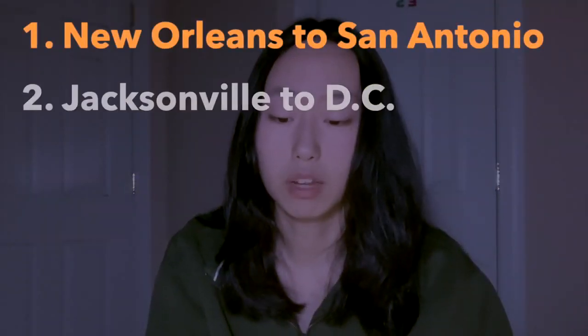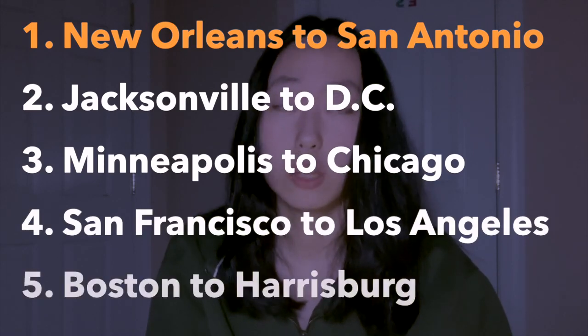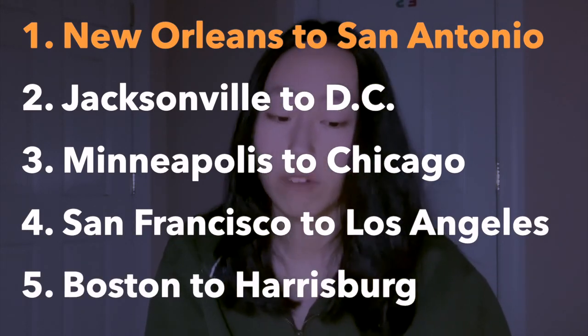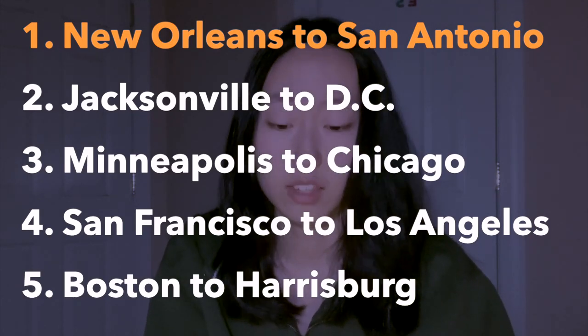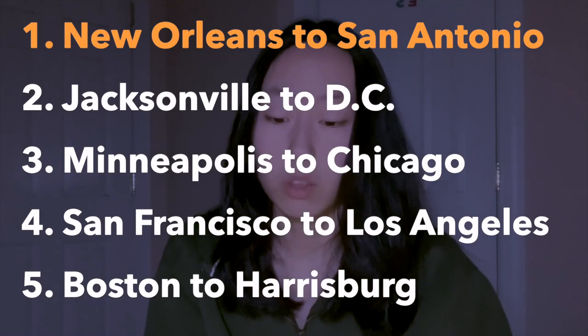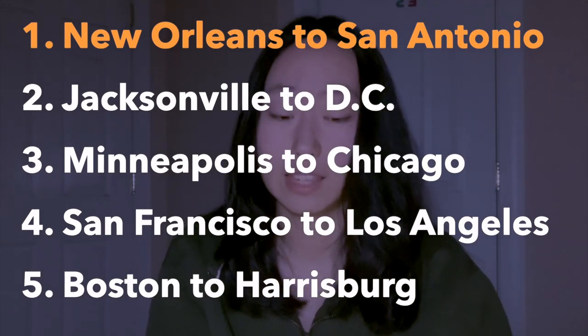Finally, we ranked the five corridors provided by the problem statement in the order of when they should be targeted for development into electric trucking routes. After considering both environmental and economic effects, we recommend that the first route to be developed should be the one from New Orleans, Louisiana to San Antonio, Texas. This concludes our video. Thank you for watching.